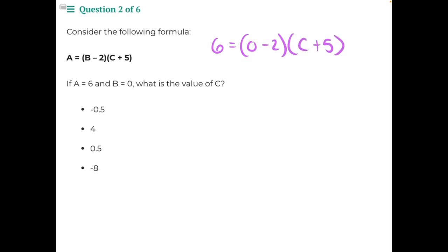Now we can start to simplify. We can start with this set of parentheses right here. 0 minus 2 would give us negative 2. We can't do anything with these parentheses because C is an unknown variable, so we would leave those exactly as they are and bring down our equal sign and our 6.